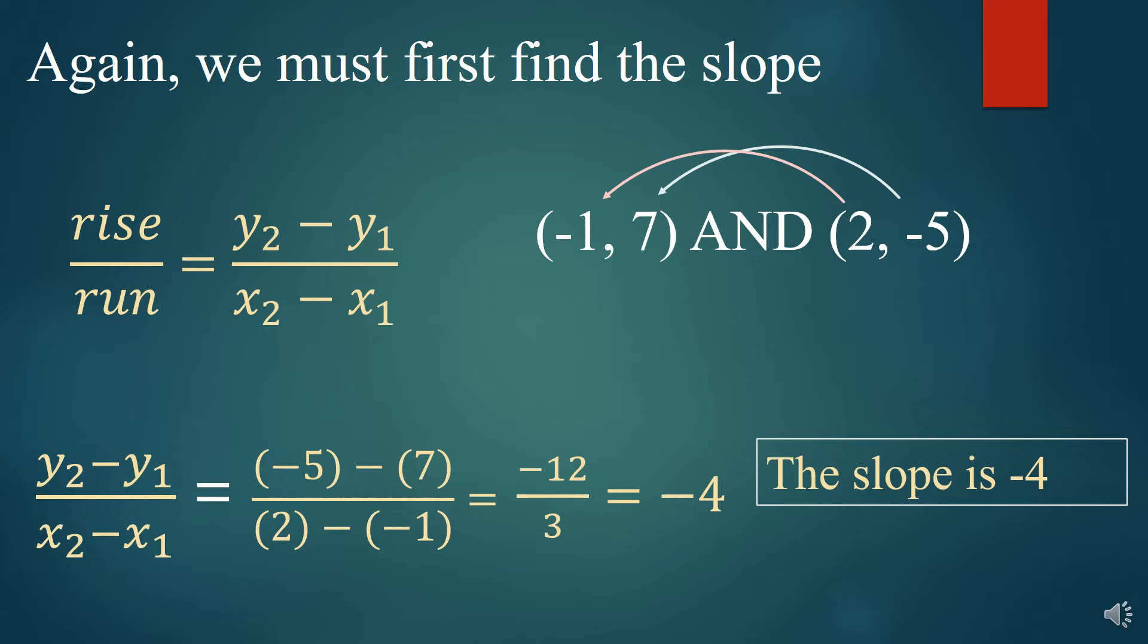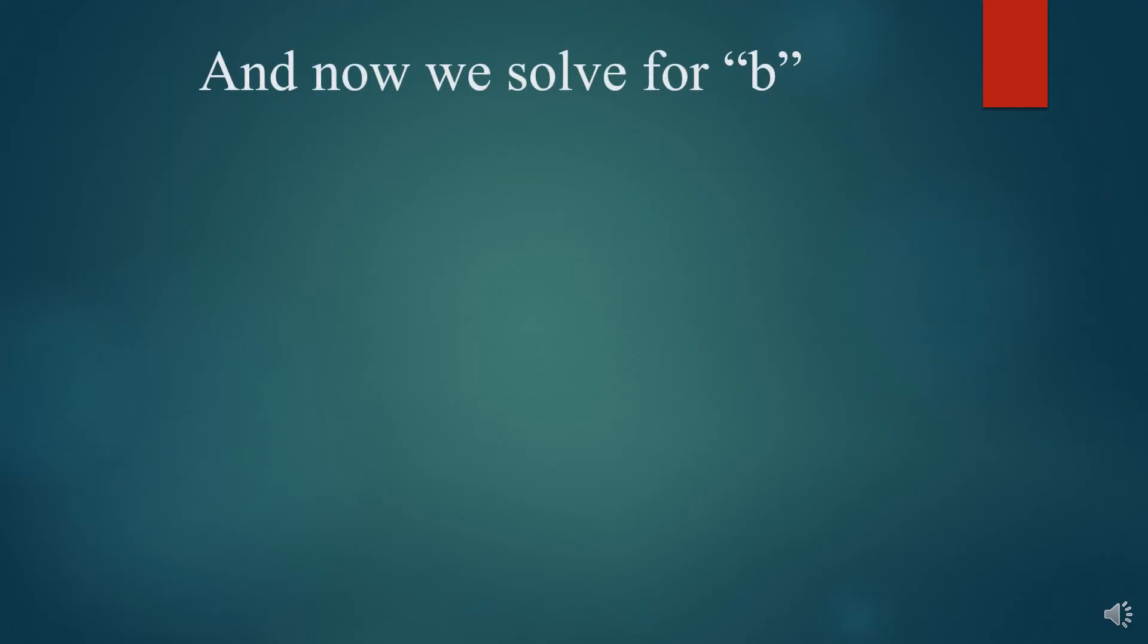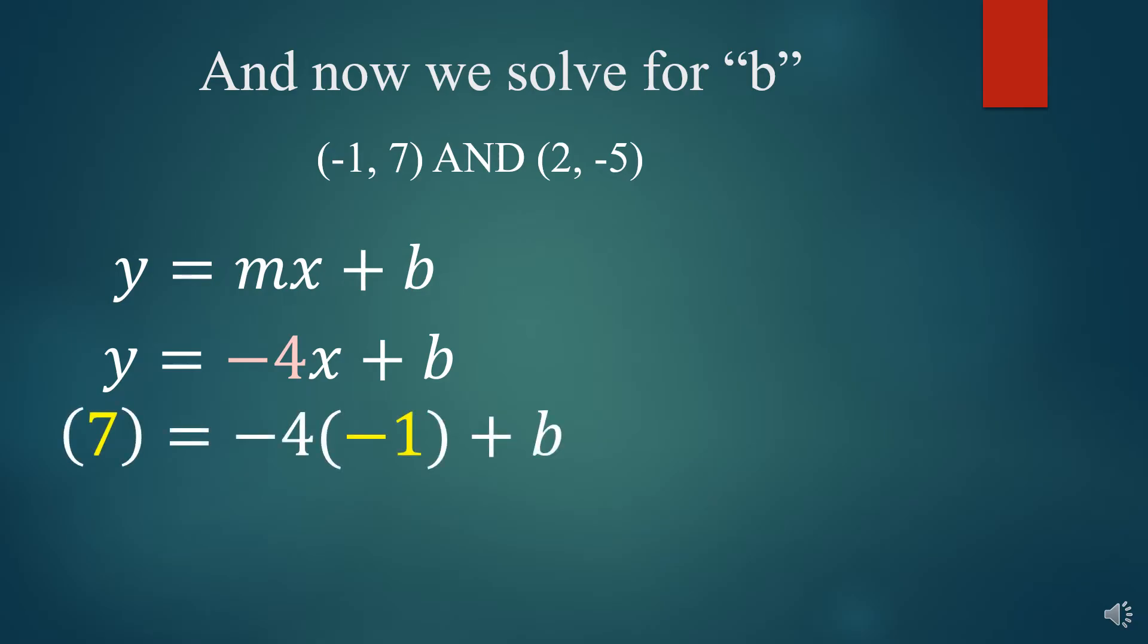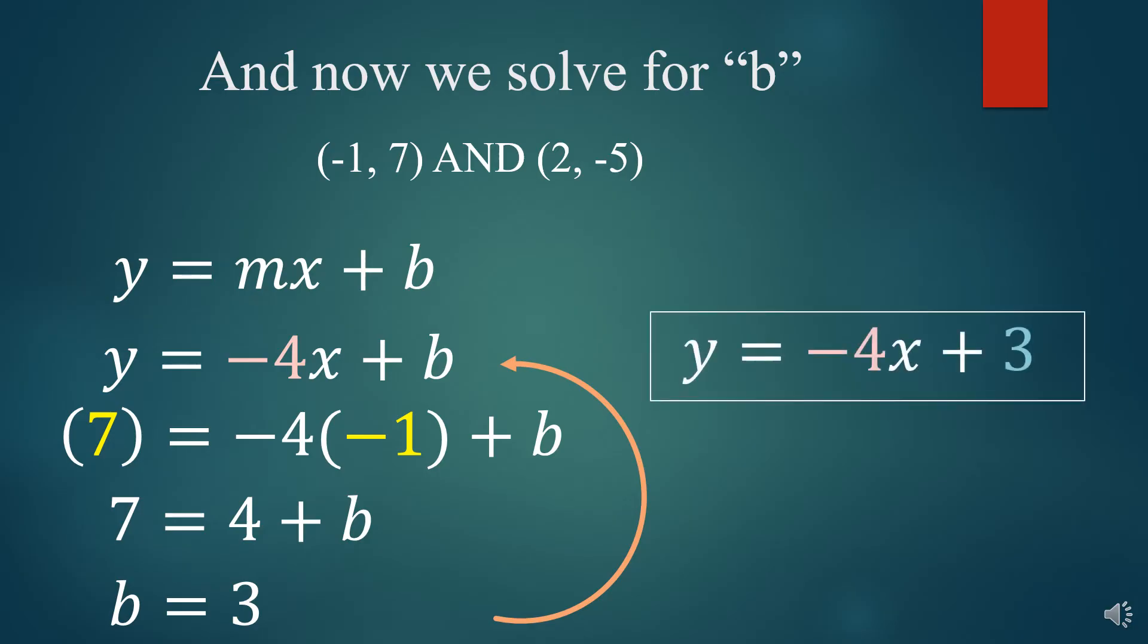Now we go on to the next step. We have to solve for the b. Remember, we use the generic form y equals mx plus b. We know what our slope is, right? It's negative 4. And so we put that negative 4 in for m, and now all we have to do is find the b. We're halfway done. So we take one of the points in our example, and I use negative 1 and 7, and I put them in for the x and the y, and now I'm going to solve for b. I simplify, and my b equals 3. Therefore, I move that 3 up into the b in that empty equation there, and I now have my equation.